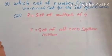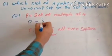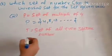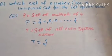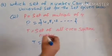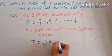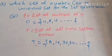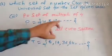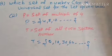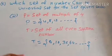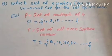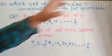Second part of question number 6: P is the set of multiples of 4: {4, 8, 12, ...}. And T is the set of all even square numbers: the square of 2 is 4, the square of 4 is 16, the square of 6 is 36, the square of 8 is 64, and so on. Like the first part, P and T are also subsets of natural numbers, whole numbers, and integers. Therefore the set of natural numbers, whole numbers, and integers are universal sets for these sets.